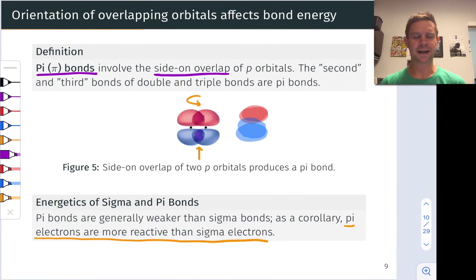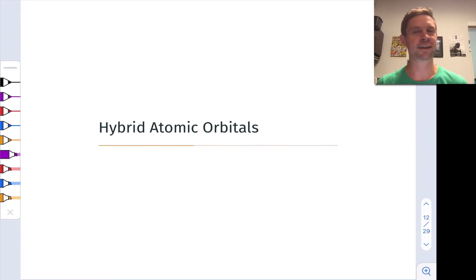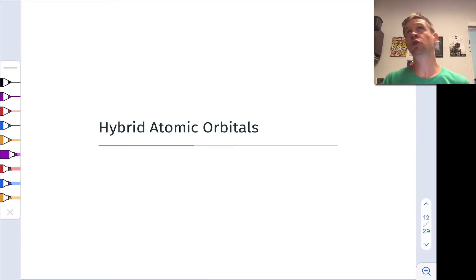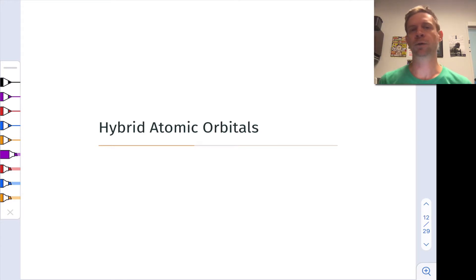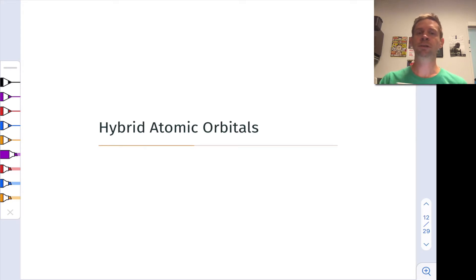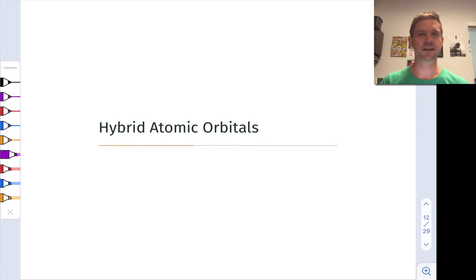Hybrids are going to be highly useful for accounting for that electron density in a conceptually efficient way. We could use the simple atomic orbitals and mix them together in complicated ways to explain bonding — molecular orbital theory does just that — but for relatively simple standard VSEPR geometries of sigma bonds, hybridization is an elegant and highly effective conceptual framework.